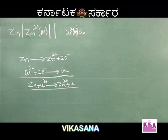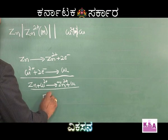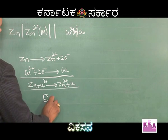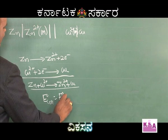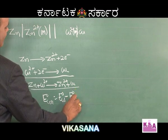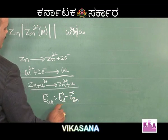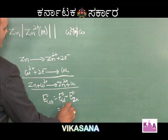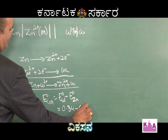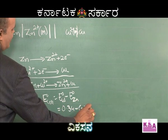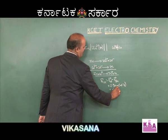You can calculate the cell potential: E° cell = E° of copper − E° of zinc = 0.34 − (−0.76) = +1.1 volt.